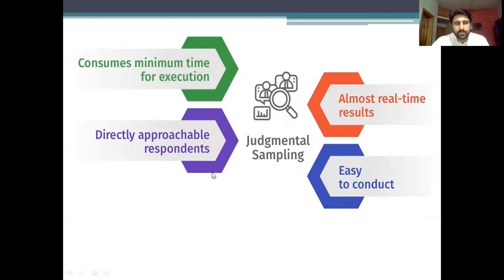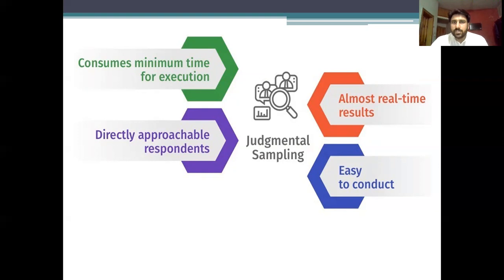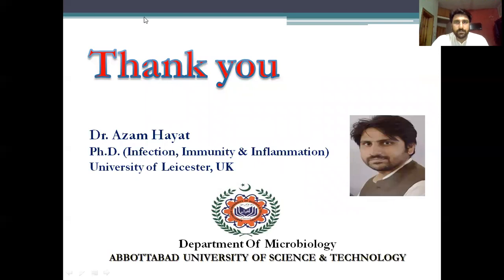Some important features of judgmental sampling: it consumes minimum time for execution, respondents are directly approachable, results are available almost in real time, and it is comparatively easy to conduct. It also provides authentic information because the respondents chosen are of good quality and may give good findings for your research. However, one major problem with judgmental sampling is the issue of bias. Whenever the researcher decides to contact a specific group of people, they might show favoritism, consulting only those who in their opinion are helpful to their study.